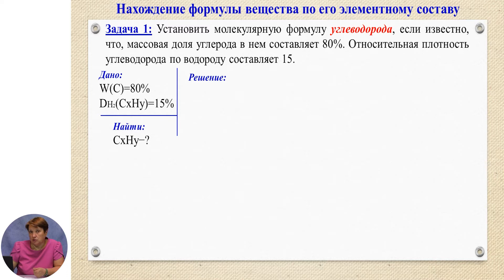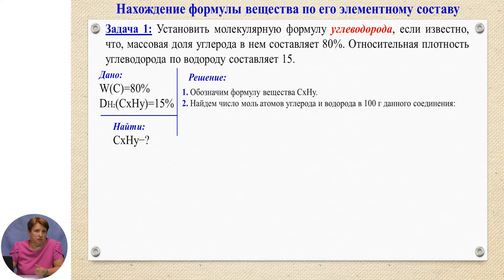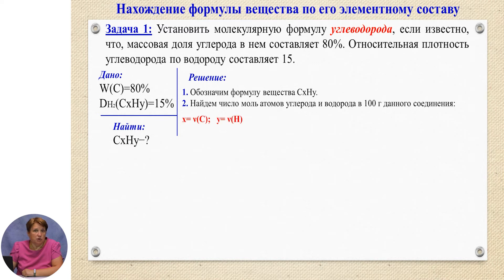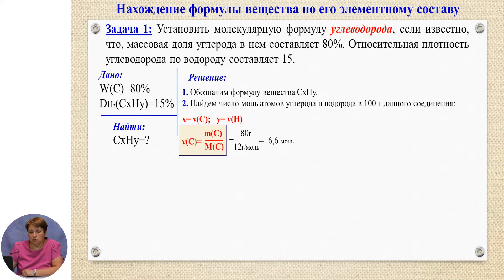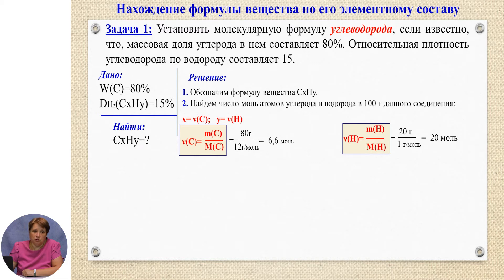We record the given data: ω(C) = 80%, relative density by hydrogen = 15. To find the substance means to find the molar ratio of elements. As a first step, let us denote the molecular formula as CₓHᵧ and find the number of moles of carbon and hydrogen atoms contained in 100 grams of this compound. We find ν using the formula: mass divided by molar mass. The calculations give ν(C) = 6.6 mol, and similarly ν(H) = 20 mol.